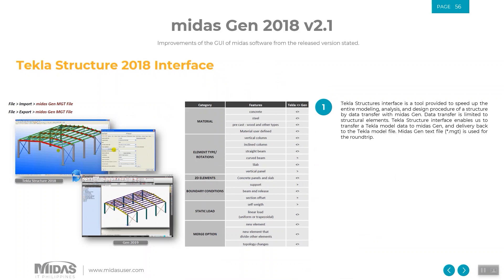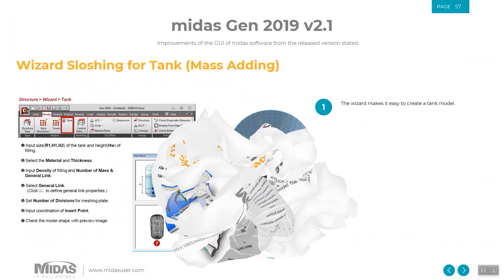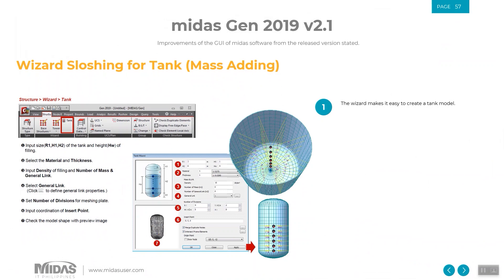Aside from Revit, if you are using Tekla Structures, this BIM software can now be interoperated or integrated with Midas Gen software, available since 2018 version 2.1. The seismic sloshing effect on tanks is very important to consider in design. Midas Gen introduced the sloshing effect in its 2019 version — using the tank wizard, you can now simulate the mass-added sloshing for the tank. To request a manual, email phinquiry@midasit.com or philippines@midasit.com.